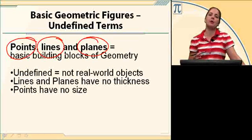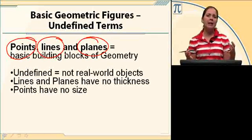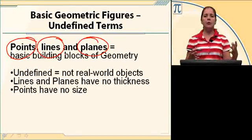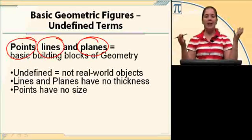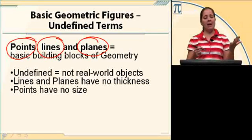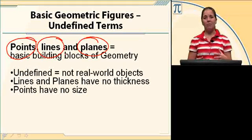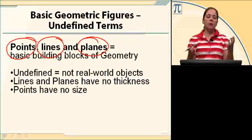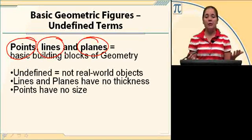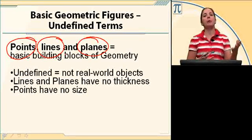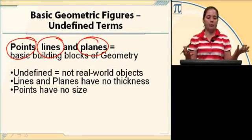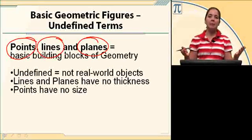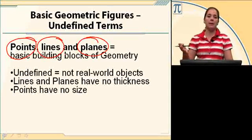Let's start with the undefined terms, or the building blocks of geometry. Those building blocks are points, lines, and planes. The reason we call them the building blocks of geometry is because these three concepts are ones we describe, and then everything else in geometry builds off of those three ideas. These three items — points, lines, and planes — are undefined. We just describe them. They don't have any size. They don't have any thickness. We agree to accept their so-called descriptions, and by accepting those, we're able to build properties and build geometry off of those three ideas.